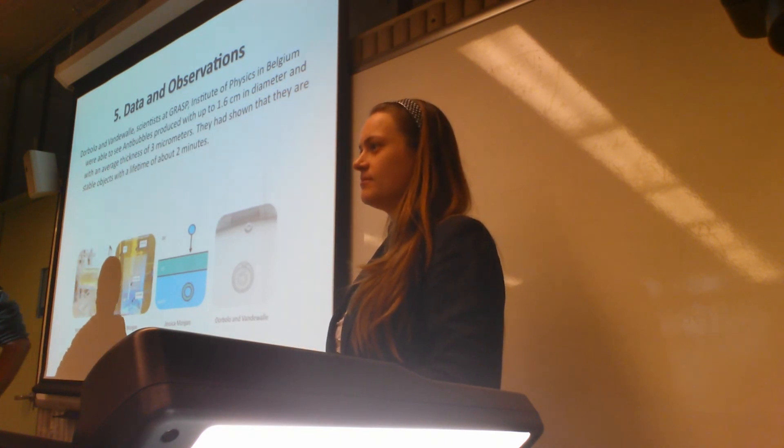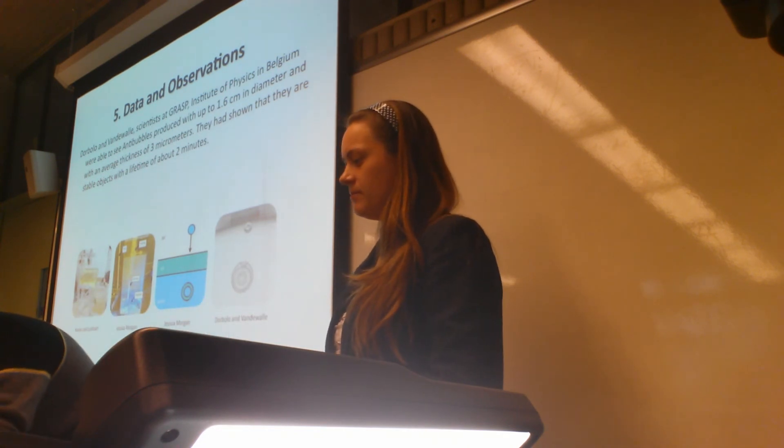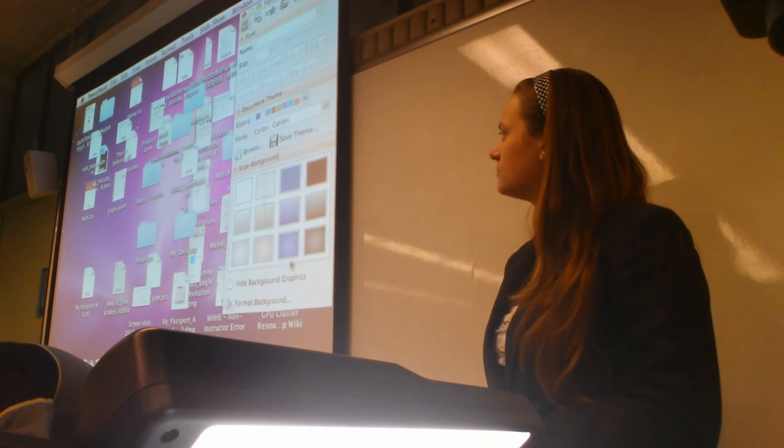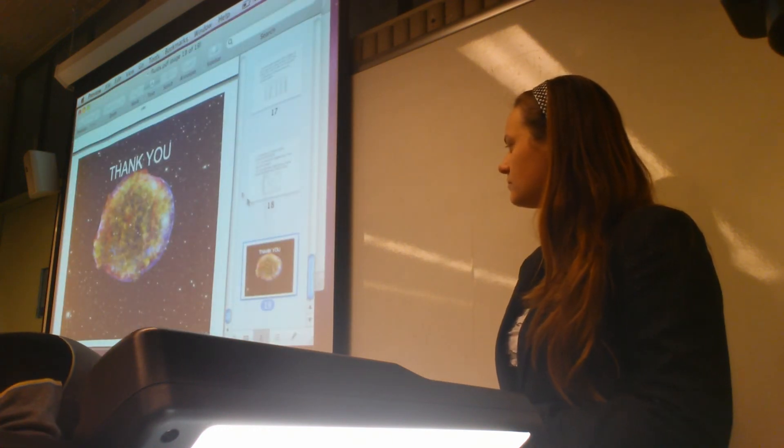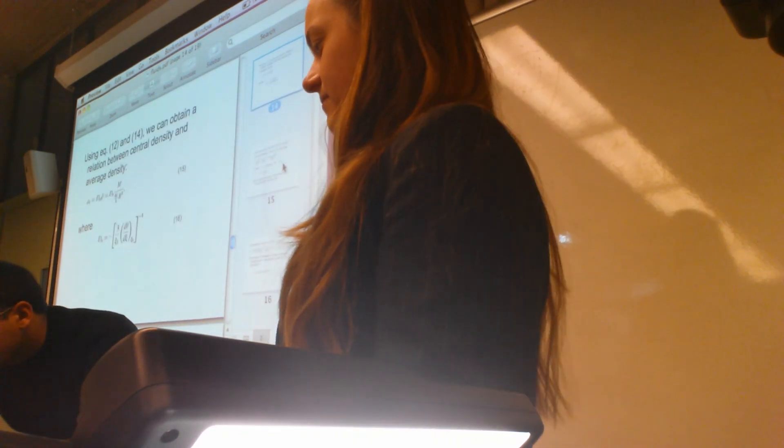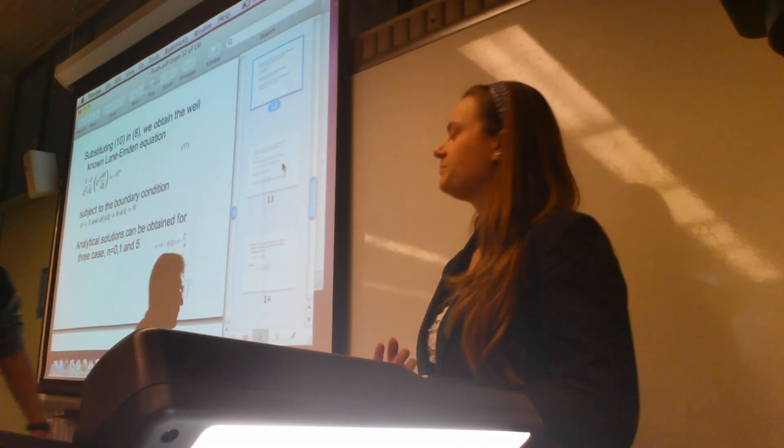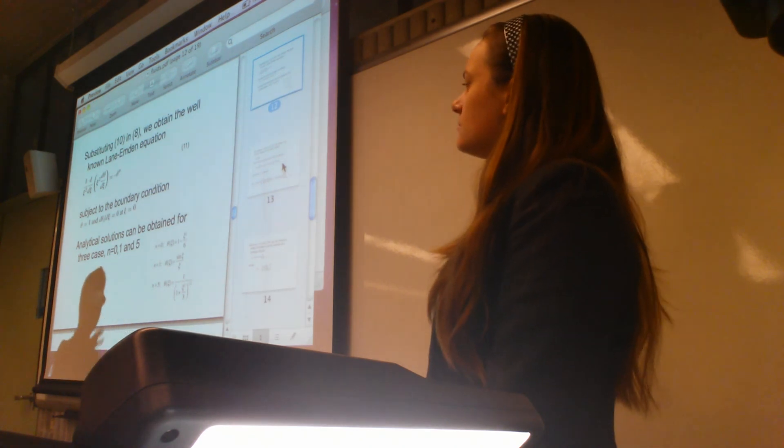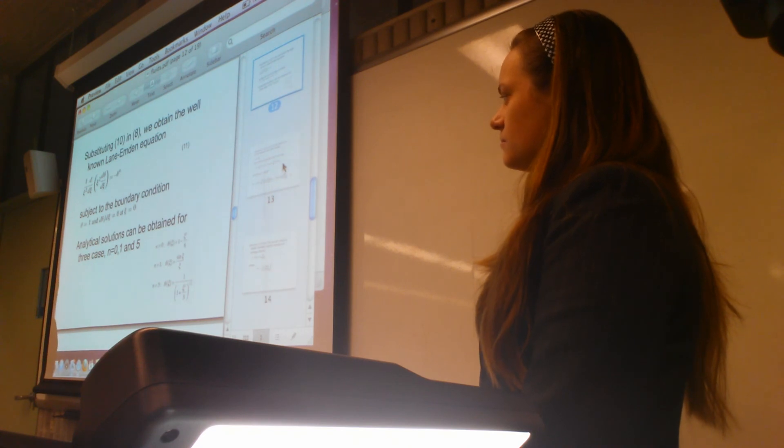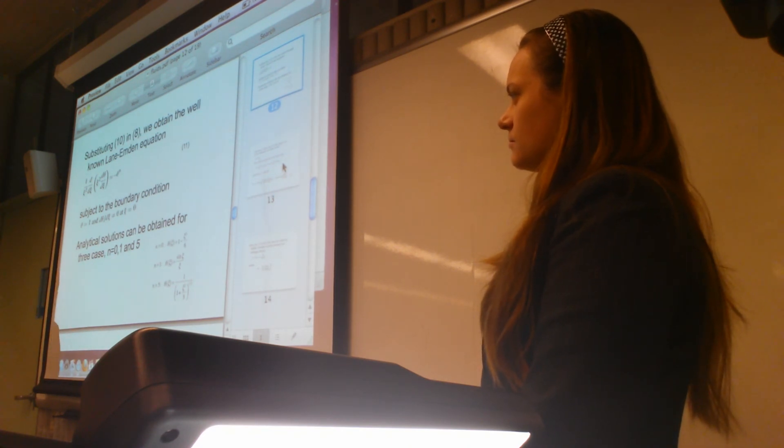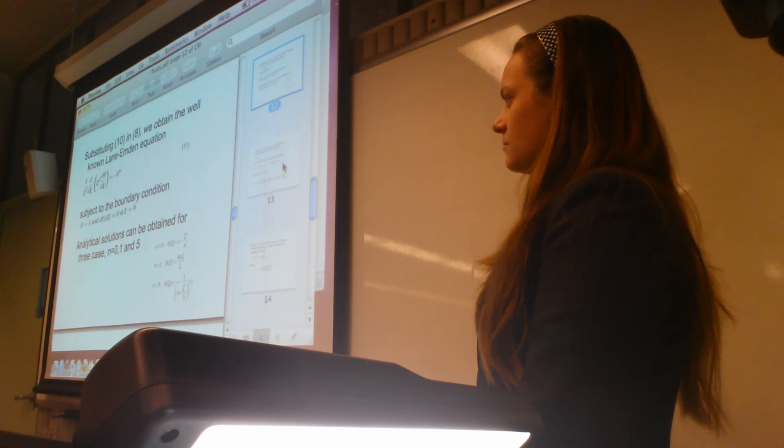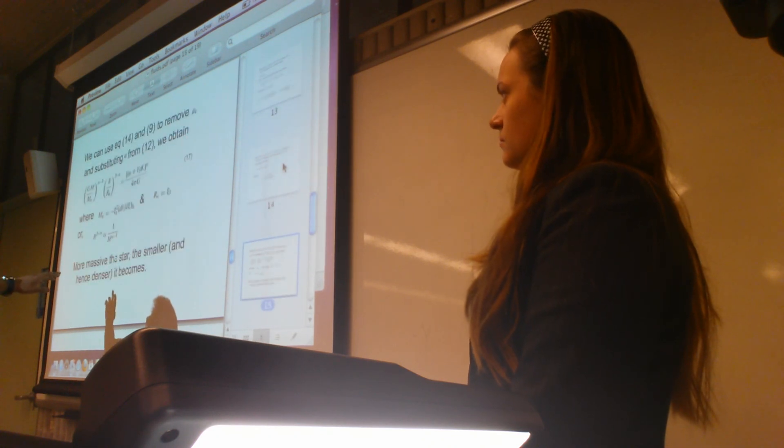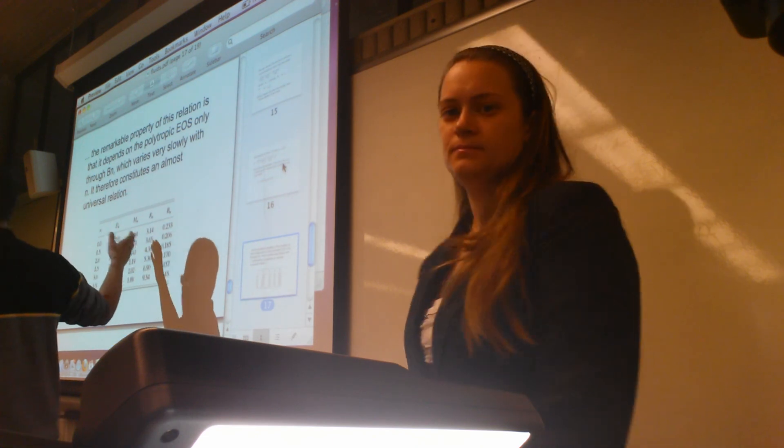Question: Can you talk about solutions to the equation that you showed? The numerical methodology, how expensive it is to run those? Answer: These solutions are analytical, these three. And there are only three analytical solutions for 0, 1, and 5, and for other values, we have to use a polytropic calculator from Clemson University. You just give the polytropic number, and it will plot the curve. Using that curve, once we have this polytropic model, we can calculate these numbers: DN, MN, RN, and DN.